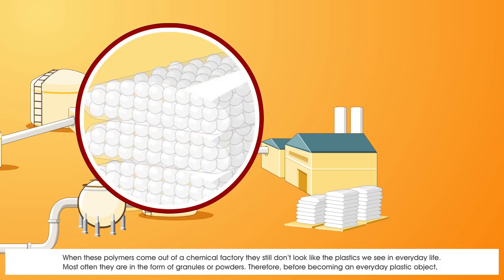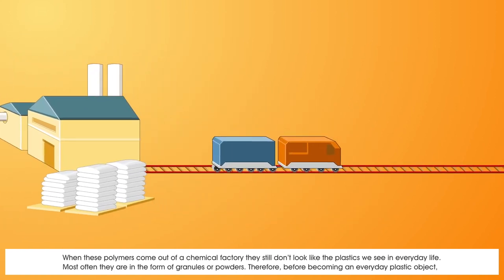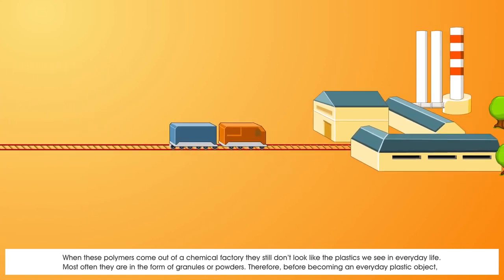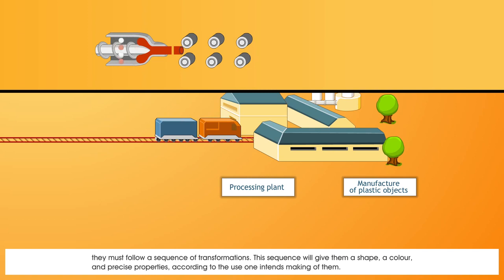When these polymers come out of a chemical factory, they still don't look like the plastics we see in everyday life. Most often, they are in the form of granules or powders. Therefore, before becoming an everyday plastic object, they must follow a sequence of transformations.